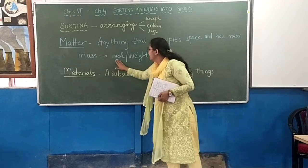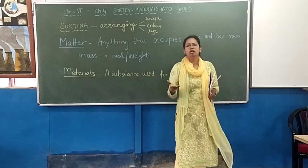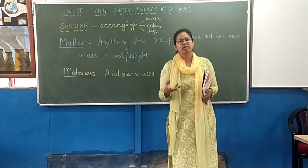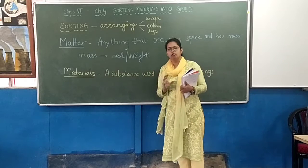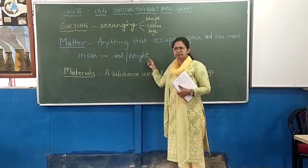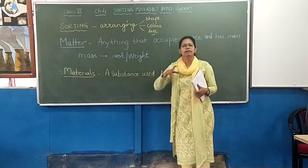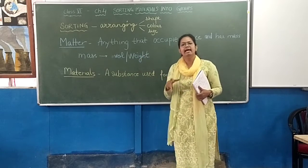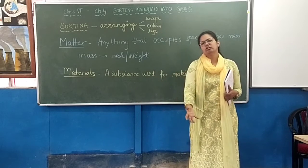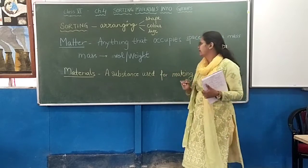What does mass mean? Mass can be volume or weight. Volume is used for liquids — koi bhi liquid hota hai usko hum volume mein measure karte hain. And for any hard object, we look at its weight. So mass means volume or weight. Anything that occupies space and has mass is matter — woh har cheez matter hai jisne space occupy ki hai aur jiska weight hai.